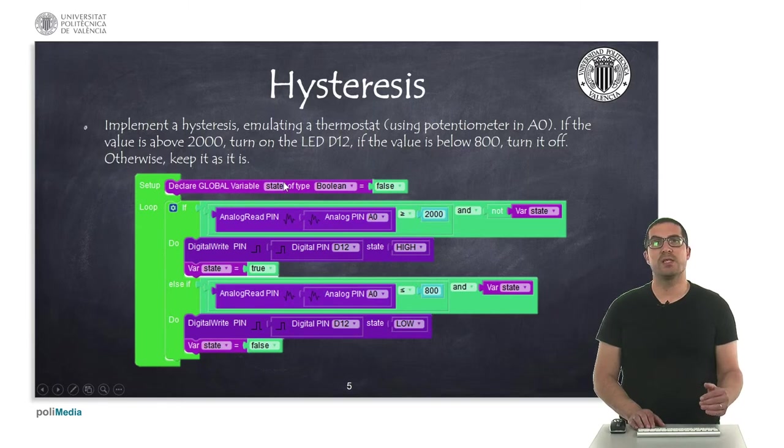So, then, if the value is above 2000 and the state is, in this case, sorry, it's false, the state is false. Then, in this case, I will turn on the LED connected to pin D12. And then, I will set the state value to true, okay?